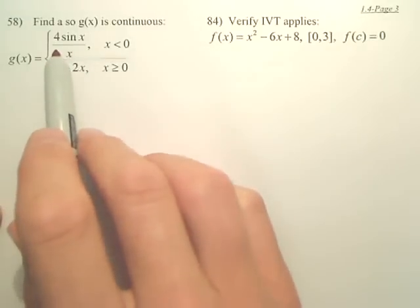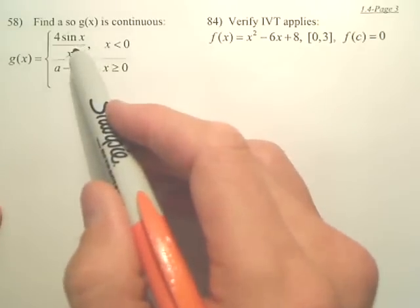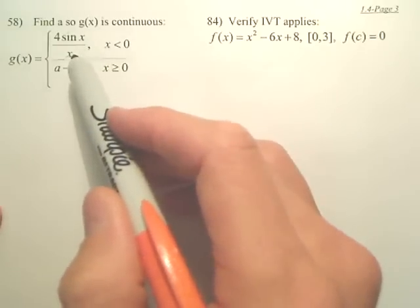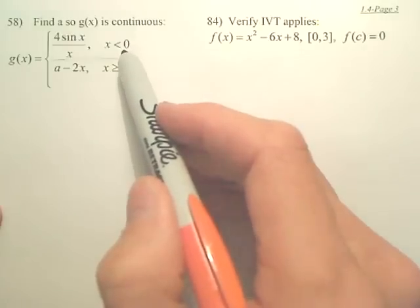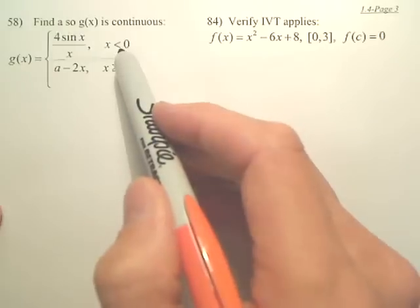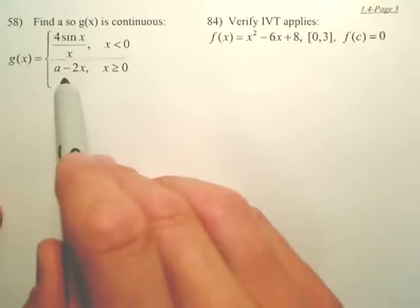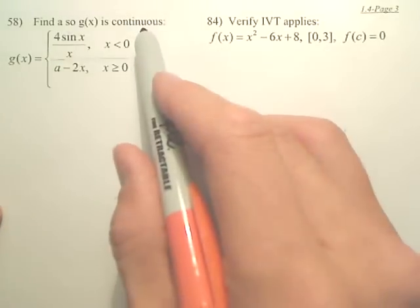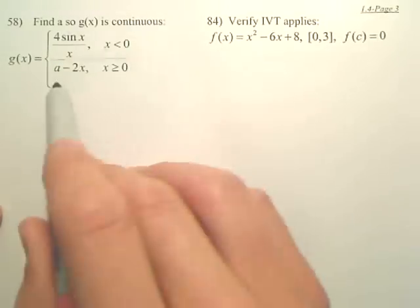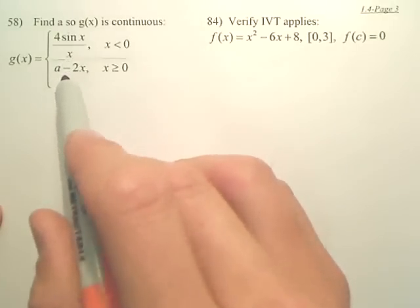This is a piecewise graph. Look at the top graph. Where is this top graph discontinuous? At zero. But is that graph used at x equals zero? No. At zero, where it is discontinuous, it gets picked up by this new equation. Now, this new equation has two variables. We need to find the a value right here so that it is continuous.